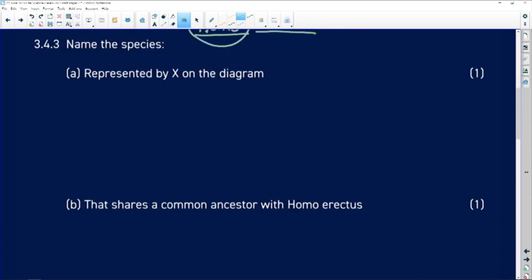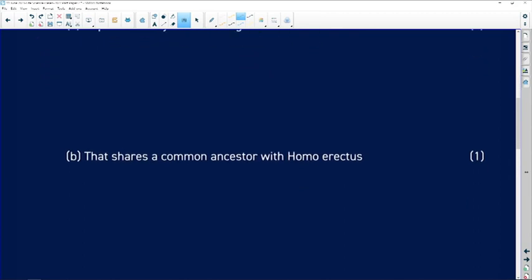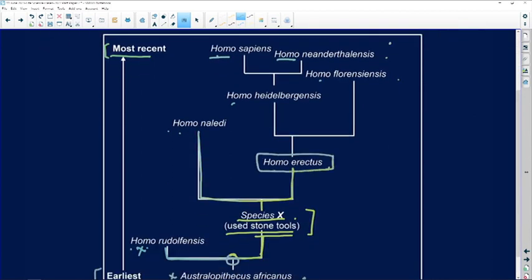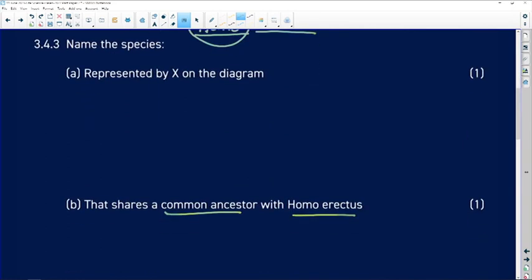We also have to name the species that shares a common ancestor with Homo erectus. Going back to our diagram, let's find Homo erectus. What species shares a common ancestor with Homo erectus? We can see that it's going to be Homo naledi. We're going to write down Homo naledi and when you write this in your handwriting, the genus name must be with a capital letter, the species name with a small letter and you must underline it.